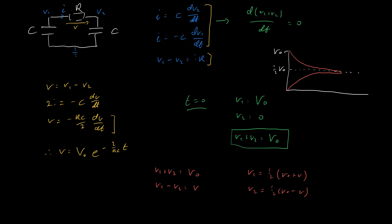We know from our earlier calculations that we have lost energy in our capacitors, but now we know where the energy has gone — it's been dissipated as heat through resistor R. According to our calculations, the amount of energy dissipated doesn't depend on the value of R. The rate at which it gets dissipated changes: if R is small we lose energy quickly, if R is large we lose it slowly. But the same total amount of energy must be dissipated, regardless of R.